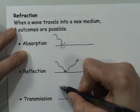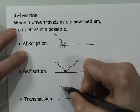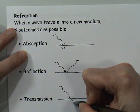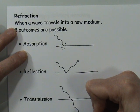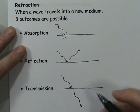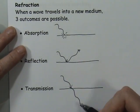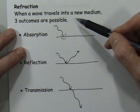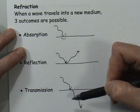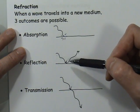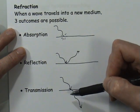The last possibility is that if it's not absorbed and it doesn't get reflected, it might get transmitted — that is, it actually goes into the new medium. Generally speaking, when a wave encounters a new medium, some of each of these will happen: there will be some absorption, some reflection, and some transmission.